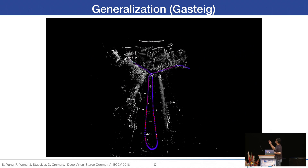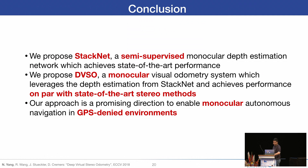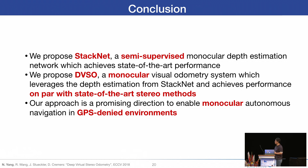To conclude, we first propose StackNet, a semi-supervised monocular depth estimation network that does not require LiDAR ground truth, achieving state-of-the-art performance on the KITTI dataset. We also propose DVSO, a monocular visual odometry system that leverages depth estimation from StackNet and achieves performance on par with state-of-the-art stereo methods, using only a single camera. We believe our approach is a promising direction to enable monocular autonomous navigation in GPS-denied environments.